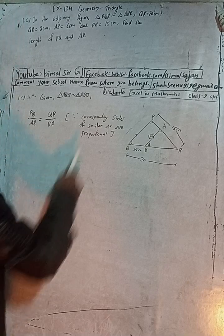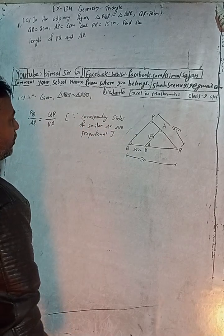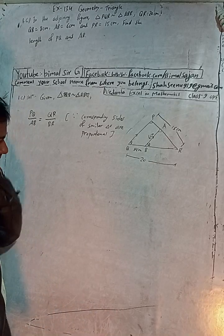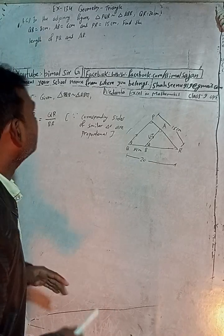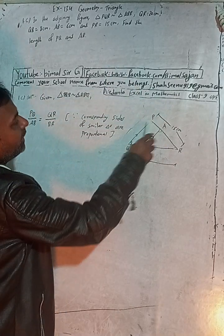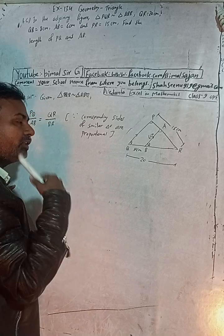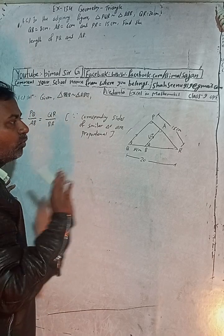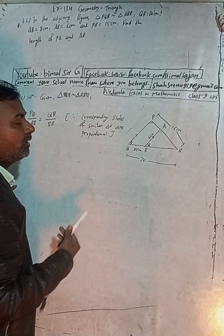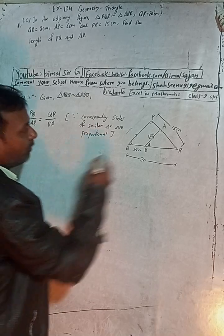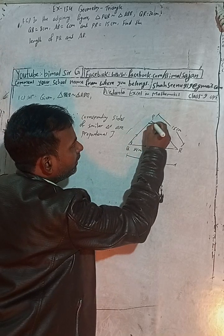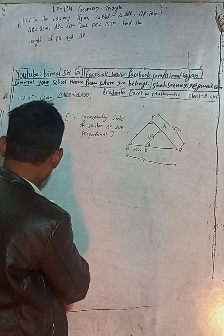Corresponding sides of similar triangles are proportional. This means the ratios of the matching sides are equal.